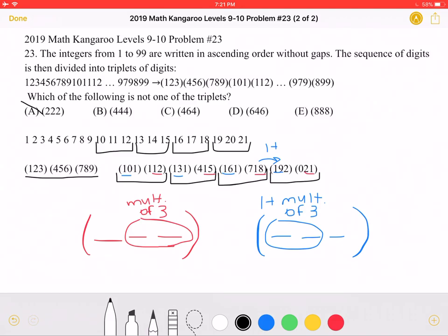Now let's look at B. The last 2 digits, 44, is not a multiple of 3. And the first 2 digits, which are also 44, is not 1 more than a multiple of 3 because 43 is not a multiple of 3. So it looks like this is our correct answer, but let's keep going.